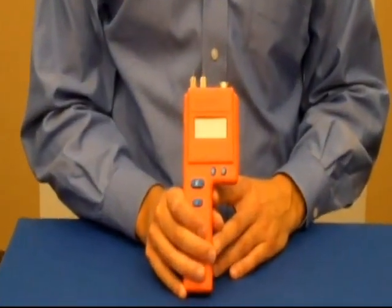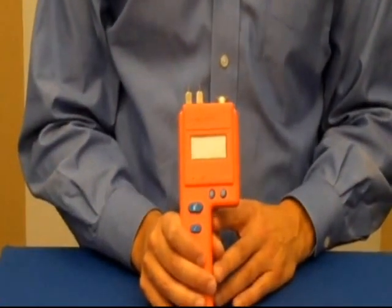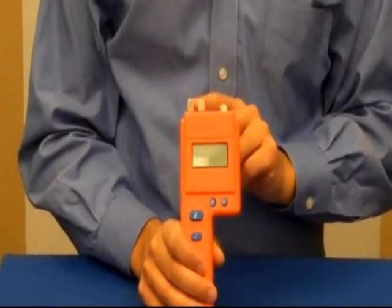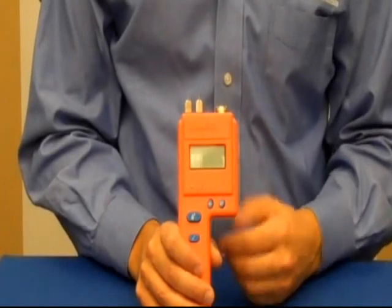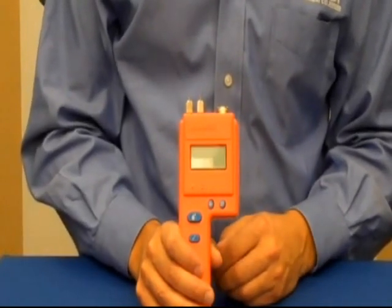The BD2100 is a pin-type moisture meter. It's very flexible in that it can measure moisture in drywall, wood, and other building materials like insulation and concrete.